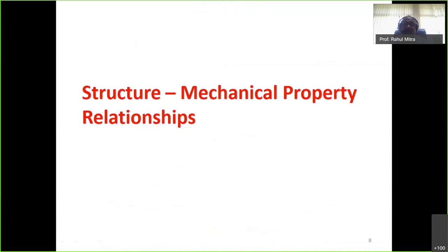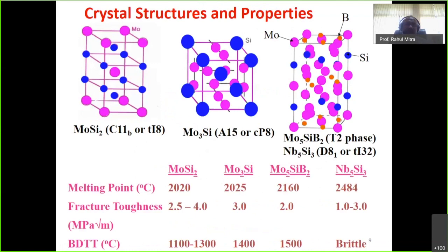Regarding crystal structure and mechanical properties: MoSi2 has a body-centered tetragonal structure with 8 atoms per unit cell; Mo3Si has 8 atoms in a cubic structure; Mo5SiB2 has a tetragonal structure with 32 atoms. All these structures are of low symmetry. Melting points are all above 2000°C, but fracture toughness is in the range of 1–4 MPa√m, which is unacceptable for structural applications. The brittle-to-ductile transition temperatures are also quite high.